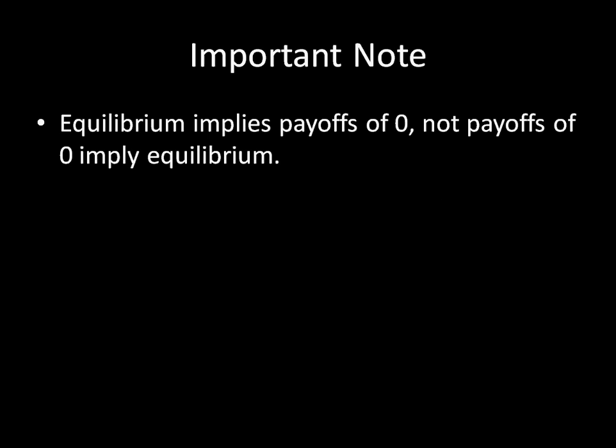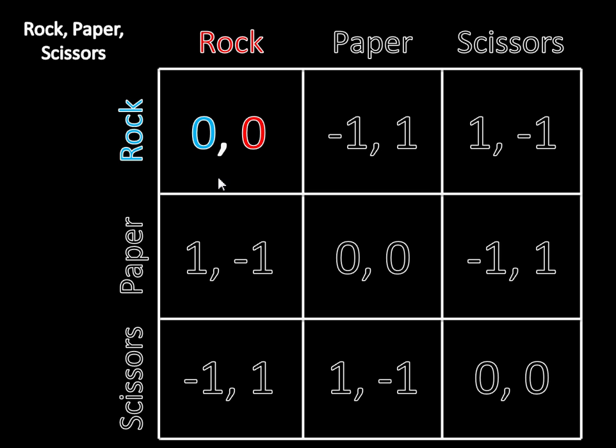There's an important note here: equilibrium implies that payoffs are zero, not that payoffs of zero imply equilibrium. This theorem is just saying that if you have a Nash equilibrium, then it must be the case that the payoffs equal zero. That doesn't mean you can point to payoffs of zero and call it a Nash equilibrium. For example, Rock-Rock is an outcome where both players get zero, but it is not a Nash equilibrium because Player 1 could profitably deviate to playing Paper and get positive one. So all we're doing is describing what a Nash equilibrium looks like.